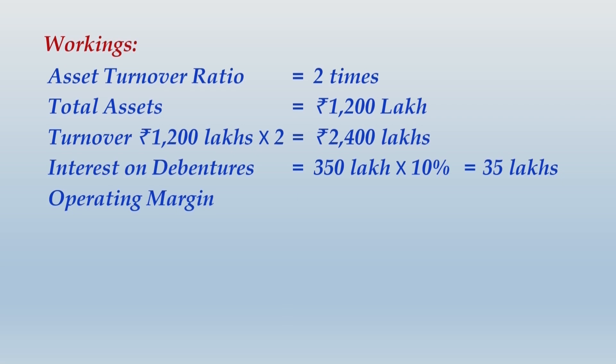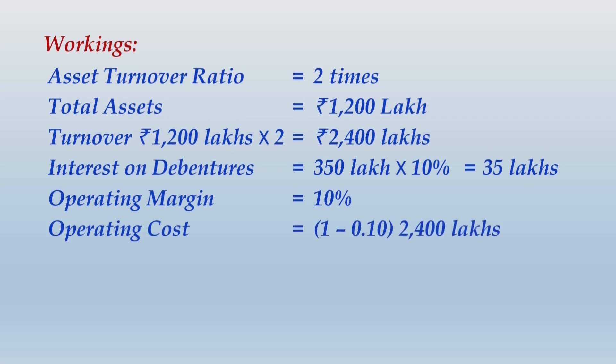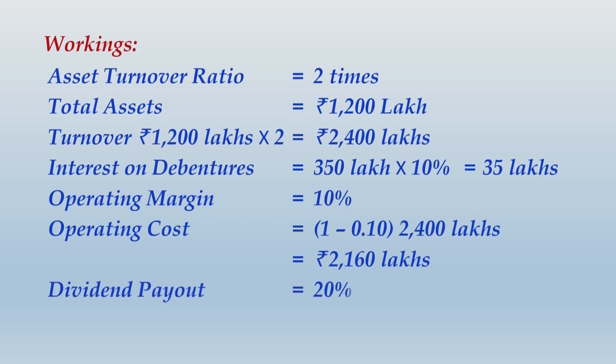Operating margin is 10%, so operating cost is 90% of sales, which comes to ₹2,160 lakhs. Operating profit or EBIT is 10% of ₹2,400 lakhs = ₹240 lakhs. Dividend payout ratio is given as 20% and tax rate is 30%.